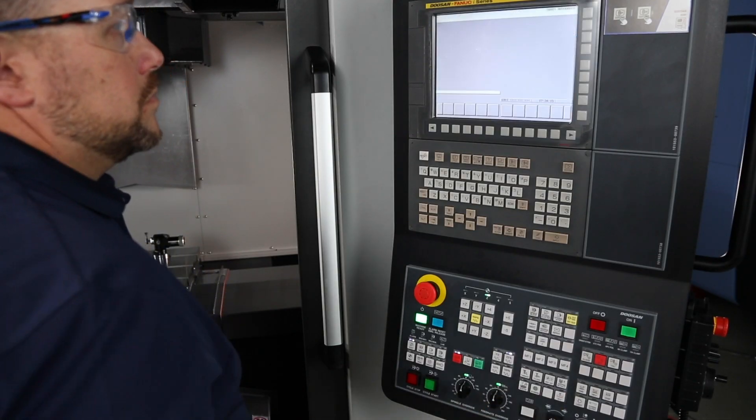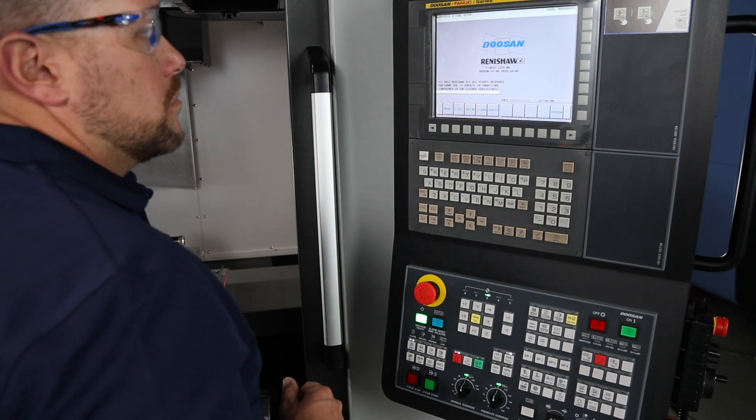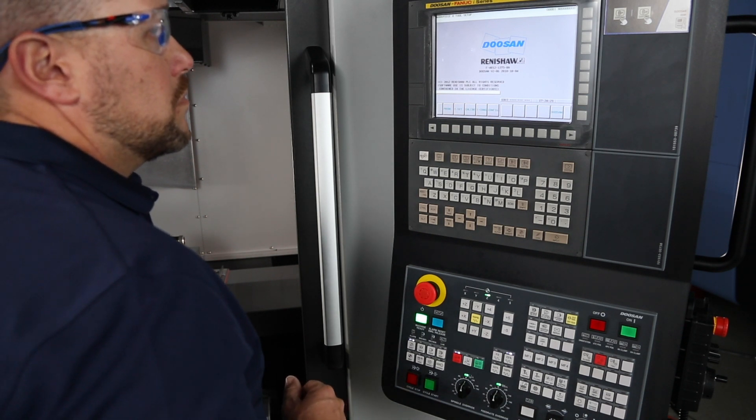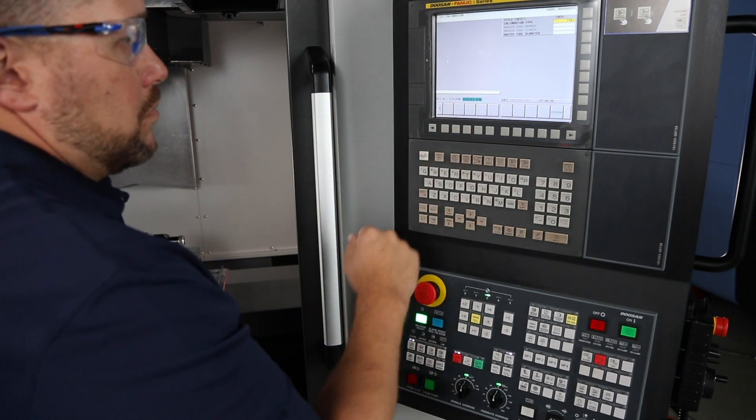Next, let's press that GUI hard key and then the Doosan Renishaw program should display on your screen. Once the ring GUI page is displayed, press calibrate, tool set, and then full.